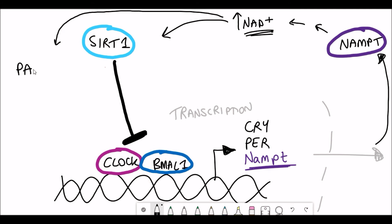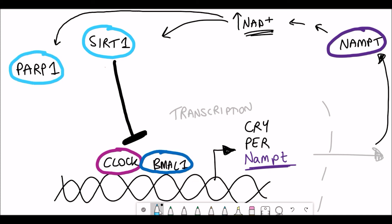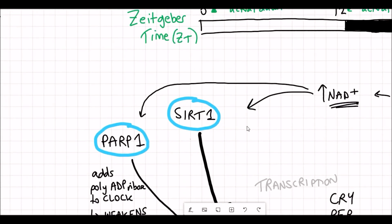And it's even more complicated than that because NAD+ is also required by another NAD+ dependent enzyme, PARP1. And PARP1 adds polyADP ribose to CLOCK. And the addition of this moiety to CLOCK actually weakens the binding of CLOCK to DNA. And so with a weakened binding to DNA, the expression of the genes is also weakened. And so again, this has an extra feedback loop and represses the clock. Very complicated.